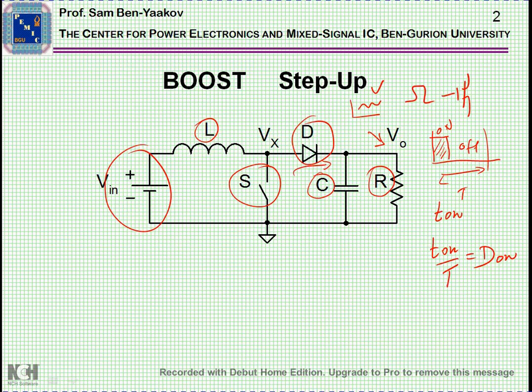It could be a smartphone or any other device. What is happening here is that we have a switch which is turning on and off, shorting the inductor to ground, then releasing it, and then current passing through the diode.